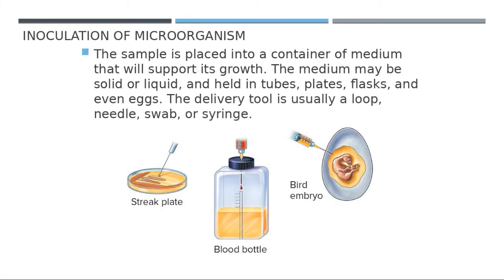Now let's revisit the Five Eyes methods, starting with Inoculation — the placement of samples into the media, into the place where microbes will grow. There are several types of media. For example, agar media — we take a sample and put it on this media. There is also liquid media, where we put the sample inside the liquid. And there is living media, such as eggs or embryo, which is usually used for viruses, since viruses need living media like bird embryo.